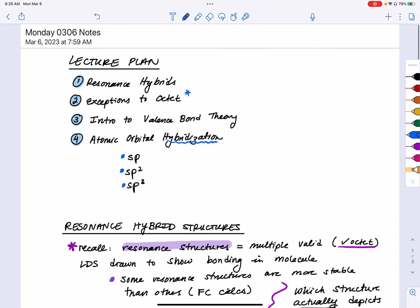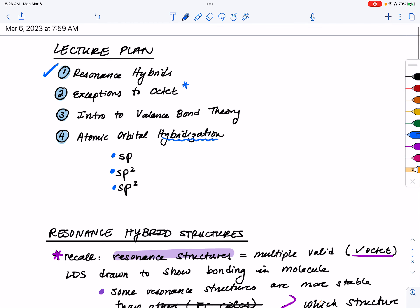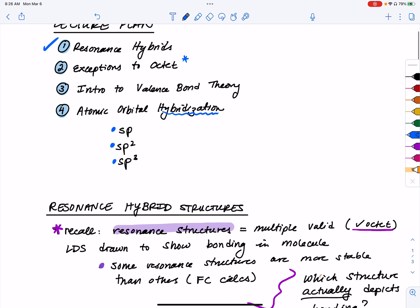So we have now discussed resonance hybrids and now we're going to throw a little wrench in our beautiful plan to talk about how to draw Lewis dot structures, which is the fact that there are a couple of exceptions to octet. So we'll discuss these exceptions to octet coming up in our next video and then we'll move on to our kind of higher order or more realistic models of chemical bonding, namely being valence bond theory.